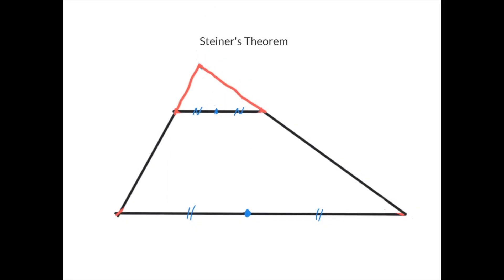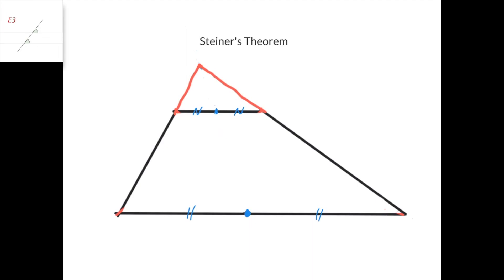So firstly, let's try to prove that this point, this midpoint, and this midpoint lie on the same line. And then we're going to see what we can say about the intersection of the diagonals. First of all, we can notice that we have some equal angles because of the parallel lines. So this angle equals this angle and the angles here are also equal. And therefore we get two similar triangles.